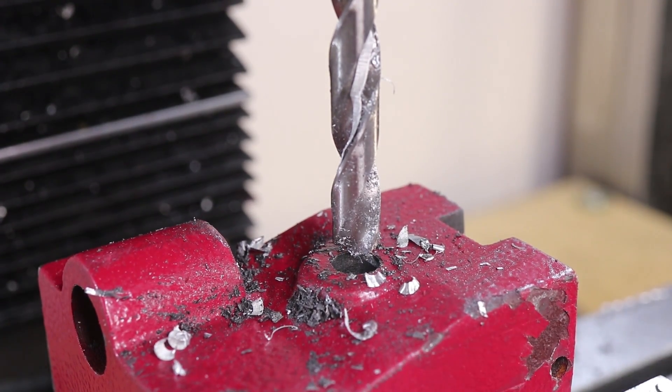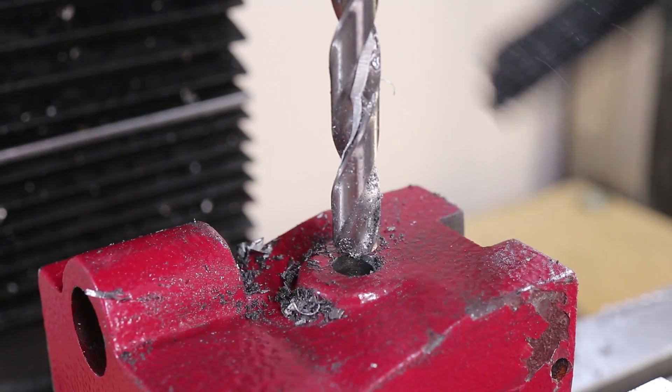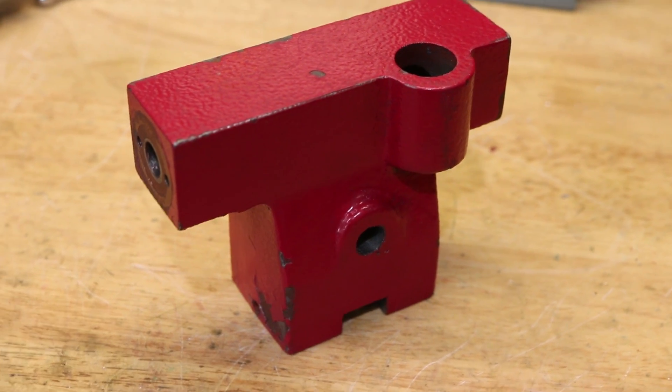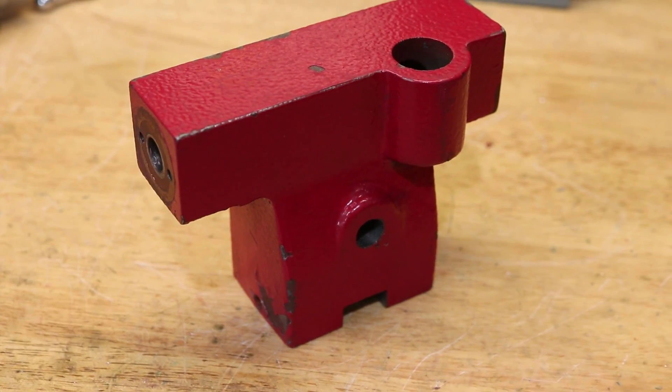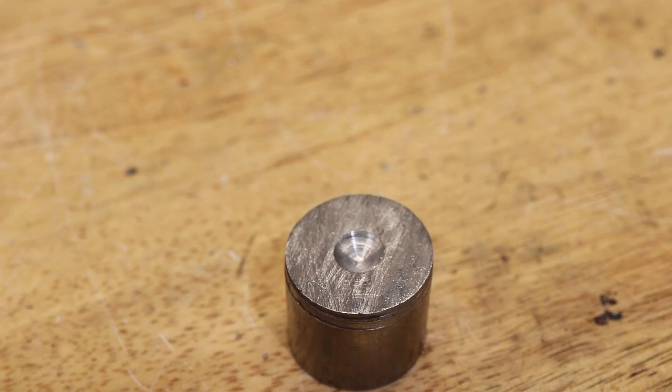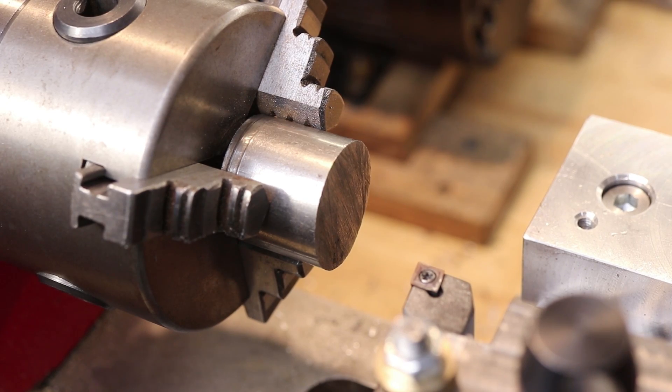Now at this point we can start to make up the internal components. However to do this I did have to reassemble the tailstock since I needed it to produce the components. The first piece I need to make is very simple. It's a cylindrical insert that will fit in the hole that we drilled in the aluminum.